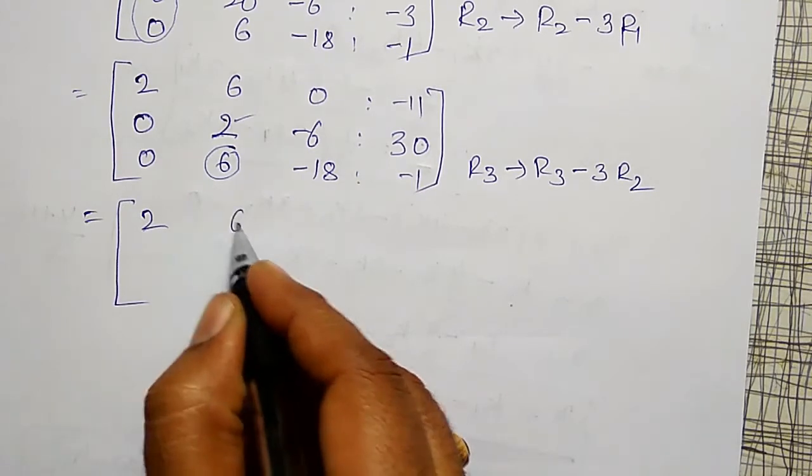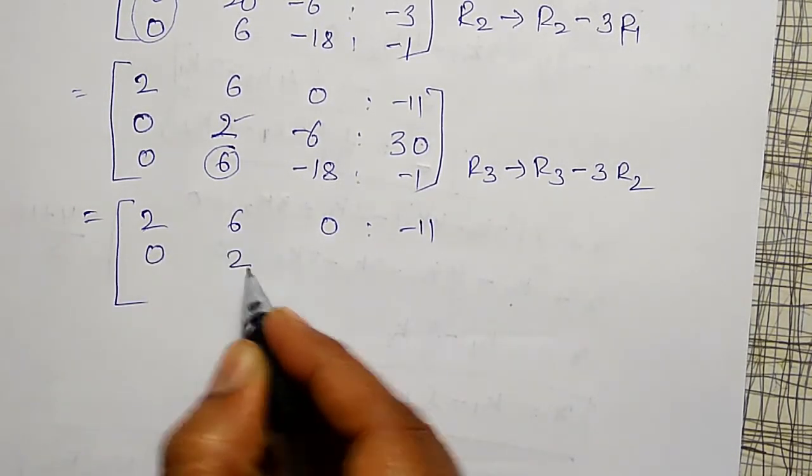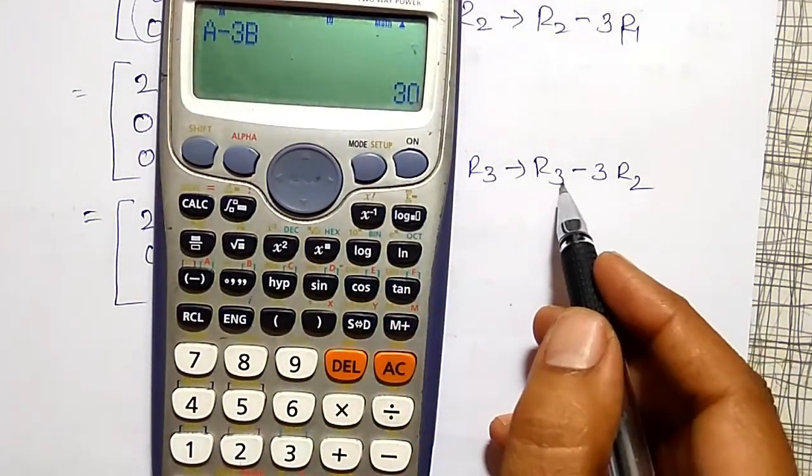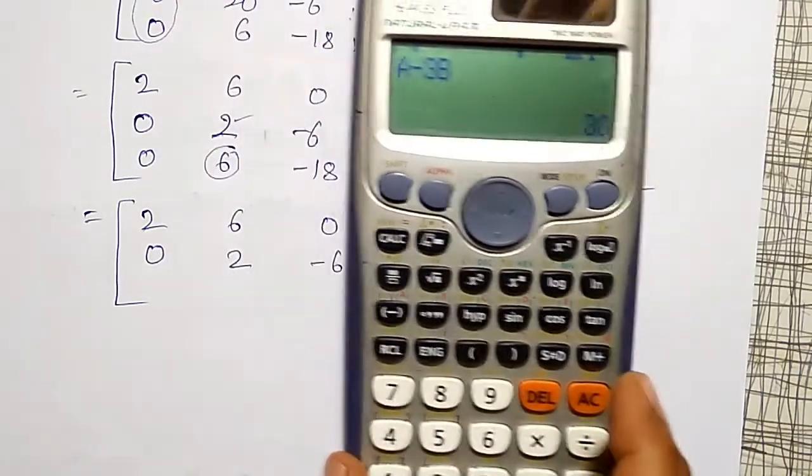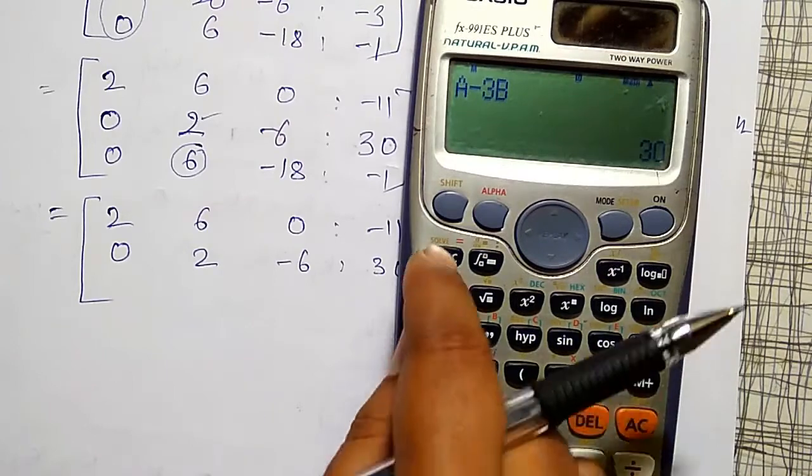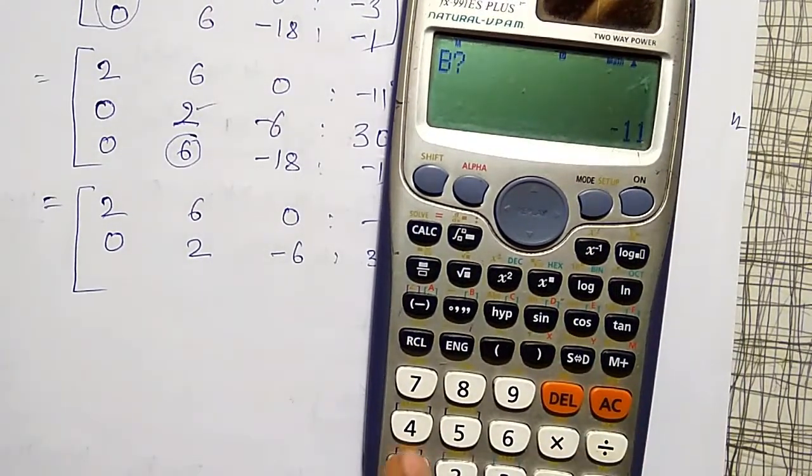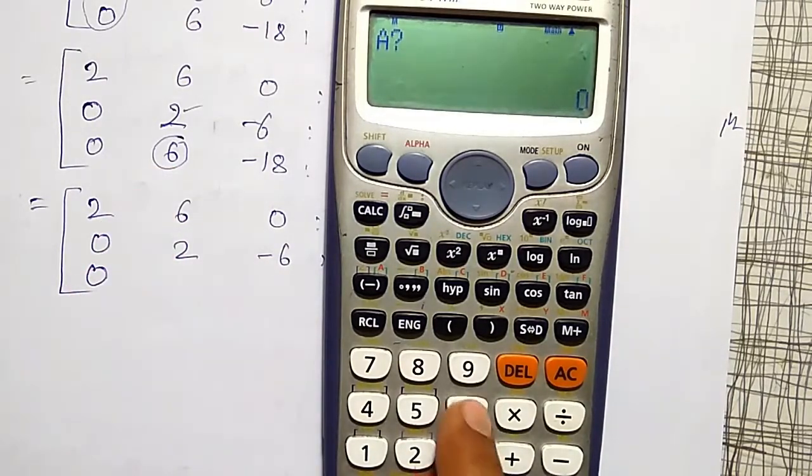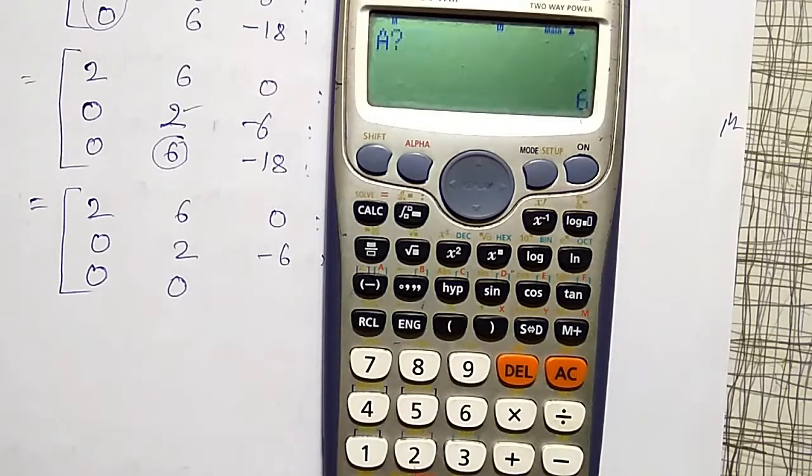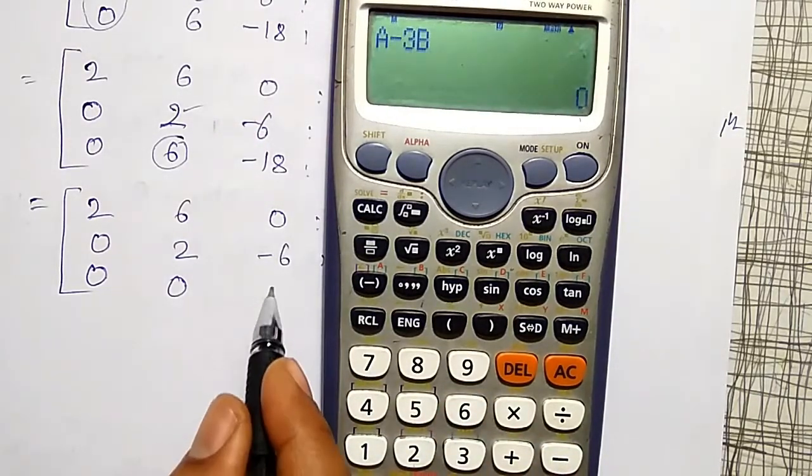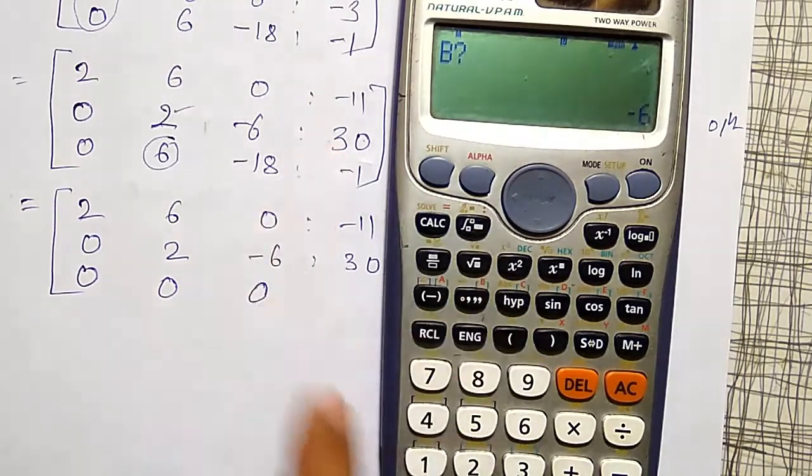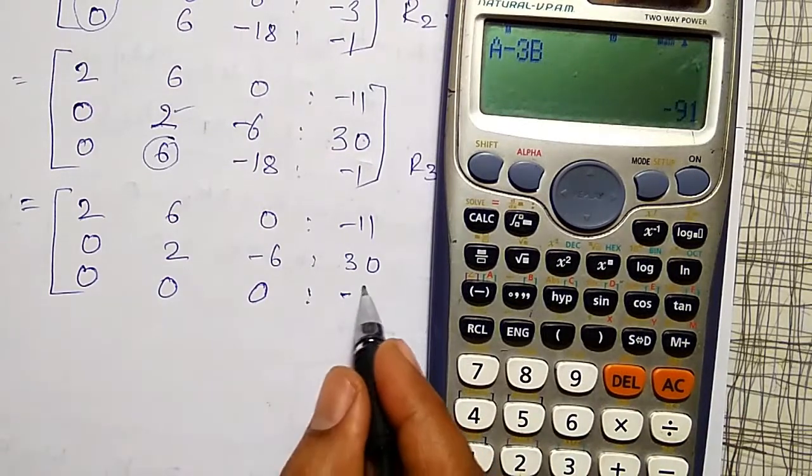First two rows will remain as it is: 2, 6, 0, minus 11; 0, 2, minus 6, 30. Then to do this operation, again I will use the calculator. In my calculator already A minus 3B is there. A is R3 and B is R2. A value is 0, corresponding B also equal to 0, I am getting 0. Next, A value is 6, corresponding B value is 2, and I am getting 0. A value is minus 18, corresponding B value is minus 6, and I am getting again 0. And for the last element, A value is minus 1, corresponding B value is 30, therefore it is minus 91.